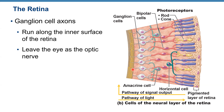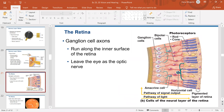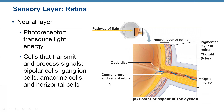Let me show you how the axons of ganglion cells form the optic nerve. Looking at this picture, these are ganglion cells and the yellow part shows their axons. They exit the eyeball through the optic disc and form the optic nerve. In the area where the optic nerve is formed there are no photoreceptors, so if light hits this area we cannot see it — that's why it's called the blind spot.